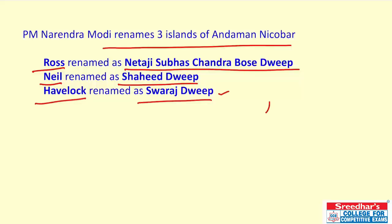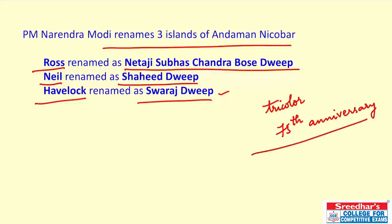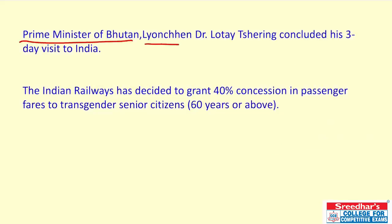As we know, Netaji Subhash Chandra Bose first hoisted the tricolor flag in Port Blair, and 2018 commemorates the 75th anniversary of this event. In this accord, the three Andaman islands were renamed: Ross as Netaji Subhash Chandra Bose Dweep, Neil as Shaheed Dweep, and Havelock as Swaraj Dweep. The Prime Minister of Bhutan, Lyonchen Dr. Lotay Tshering, concluded his three-day visit to India.